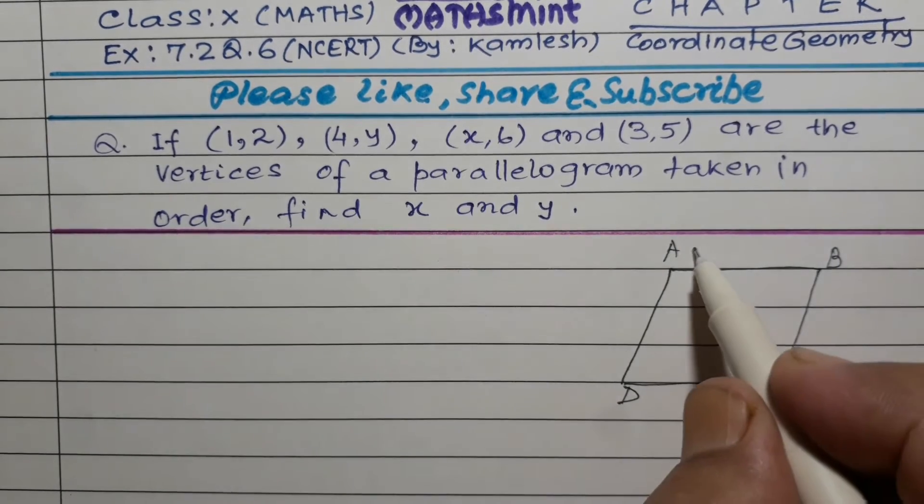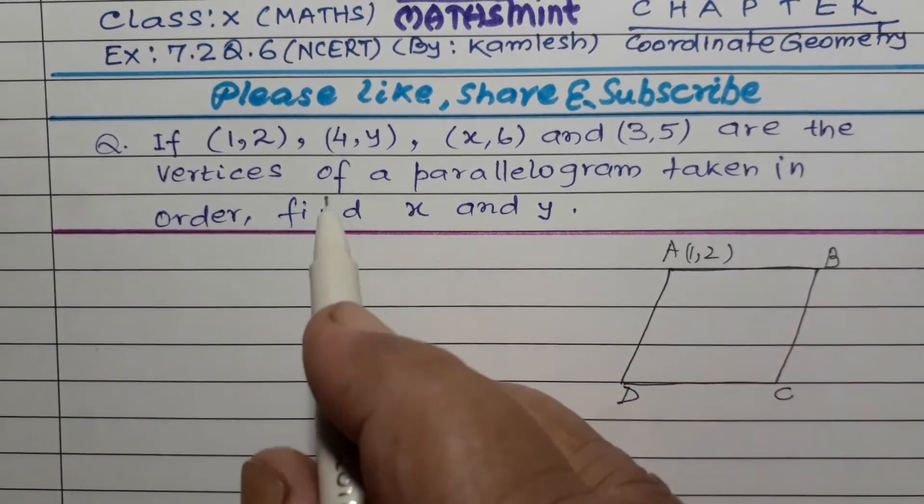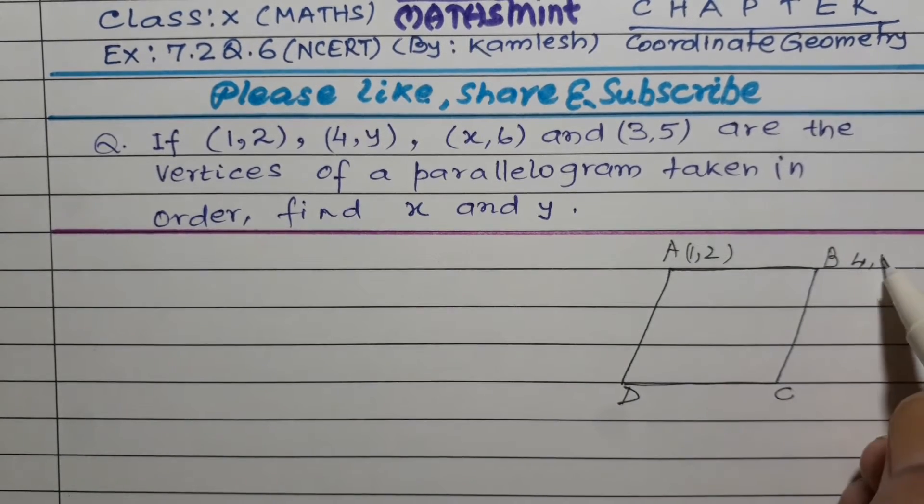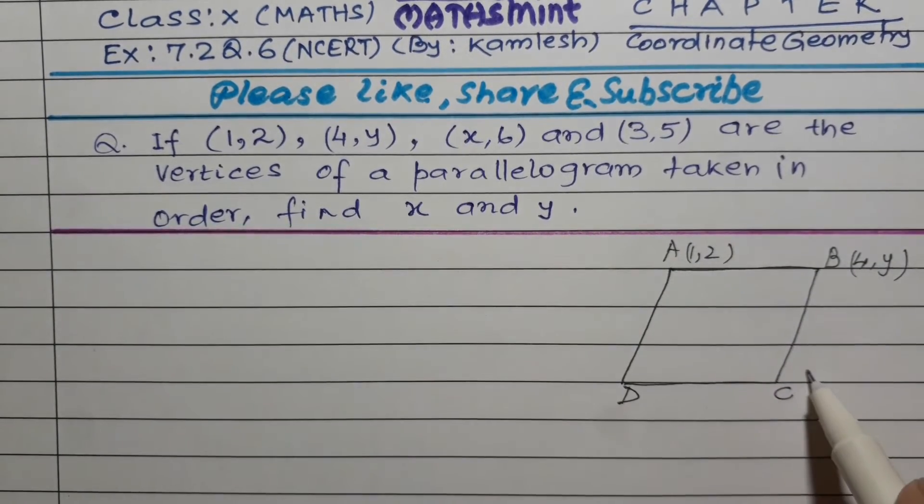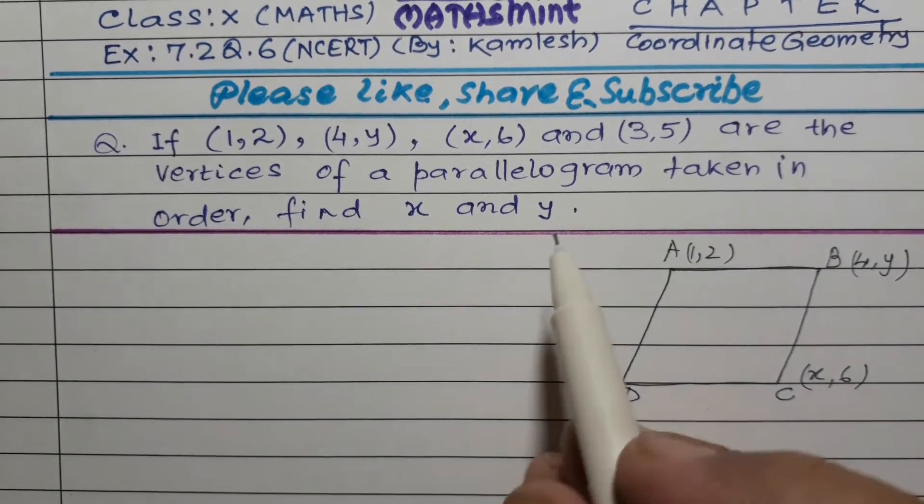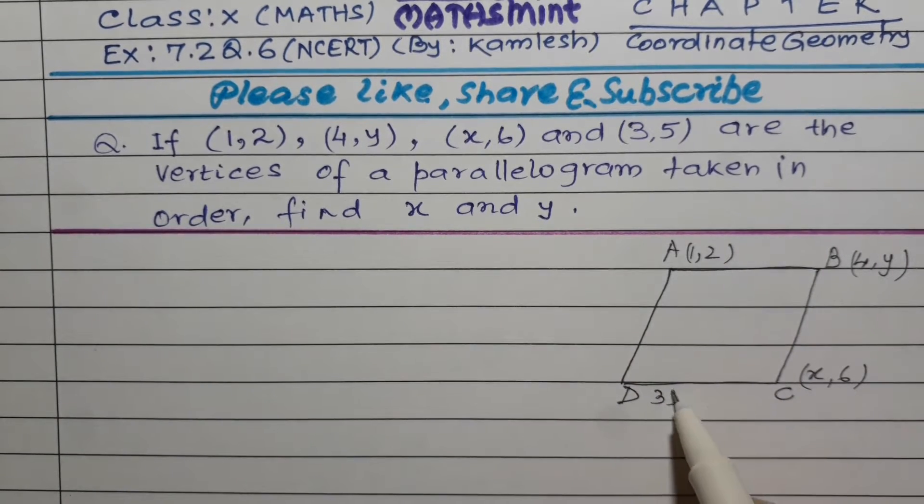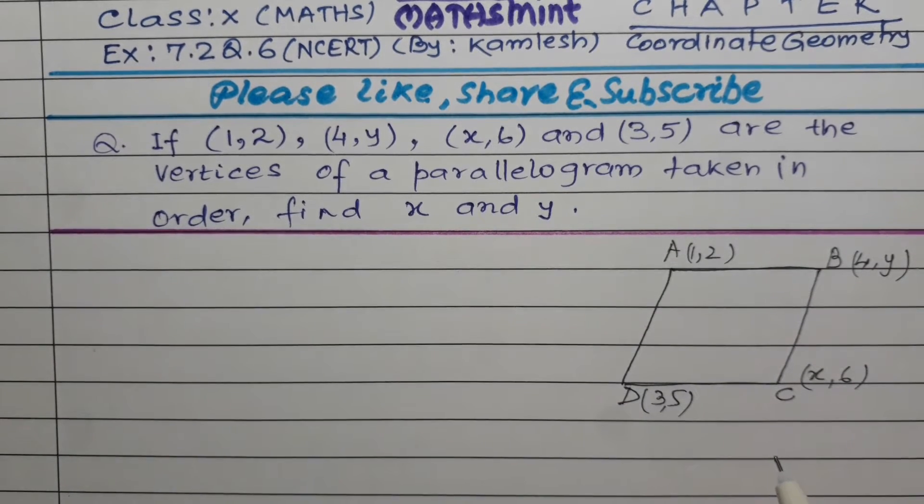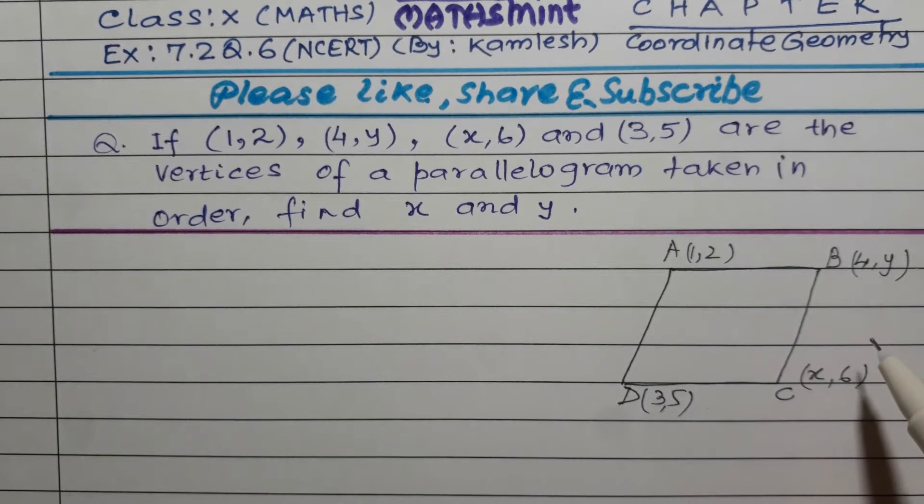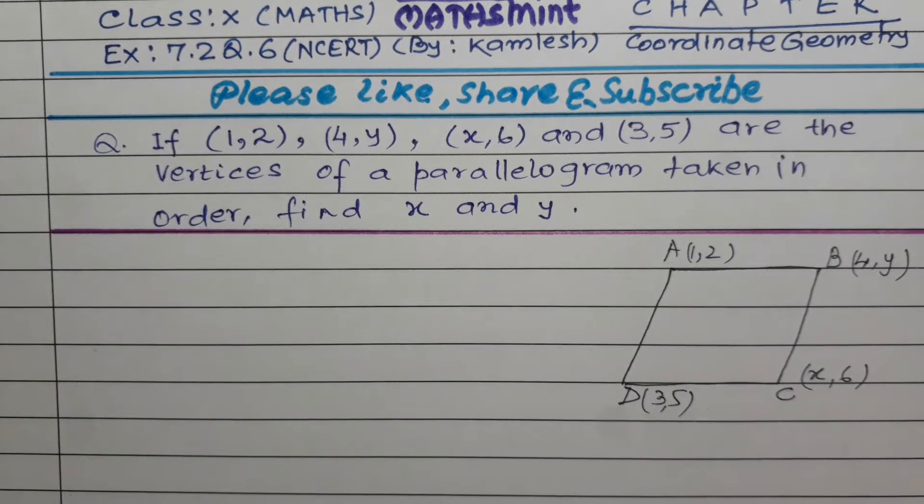So A is (1,2), B is (4,y), C is (x,6), and D is (3,5). These are the coordinates of the 4 vertices of the parallelogram. We have to find the value of x and y. In the C coordinates we see x and 6, so we need to find this x value. And in B point coordinates 4 and y, we need to find y value.